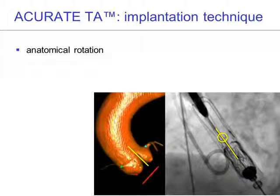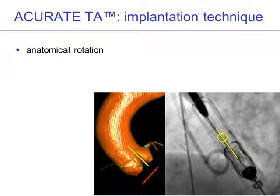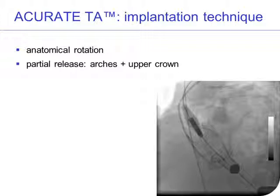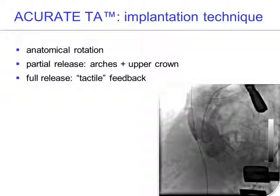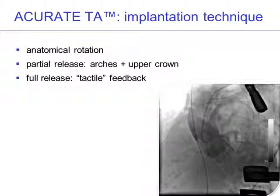To demonstrate the implantation technique further: first, you obtain an anatomical rotation to align one of the device commissures with one of the native commissures. Advanced imaging techniques like DynaCT are quite helpful for that. In the next step, the stabilization arches as well as the upper crown are partially released. Then during actual deployment, the valve is fully unsheathed, and the device provides tactile feedback, which allows for relatively simple and almost intuitive valve positioning.